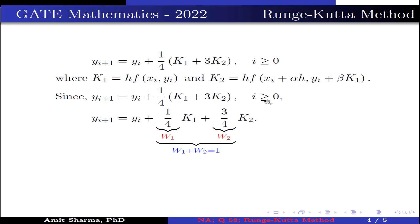This can be simplified as yi+1 = yi + 1/4·k1 + 3/4·k2, where 1/4 is represented by w1 and 3/4 is represented by w2.